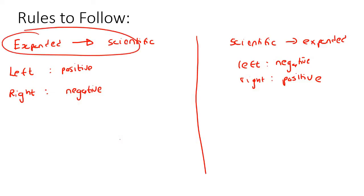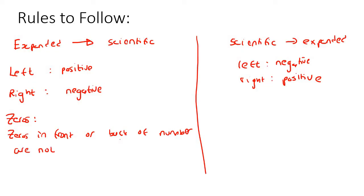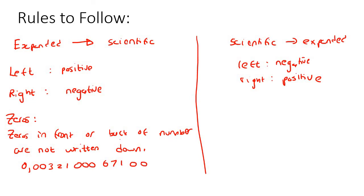Another rule for when you're going from expanded to scientific: zeros in the front or back of a number are not written down. Zeros in the front and zeros at the back are not going to be written when you go into scientific form. Zeros that are in the middle — that's absolutely fine, you can include those.